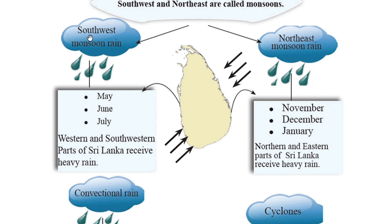You can get south west monsoon rain during the months of May, June, and July. During this period, the western and south western parts of Sri Lanka receive heavy rain. Now you can see in this picture — the green color part is the land area of Sri Lanka, which is an island covered by sea.